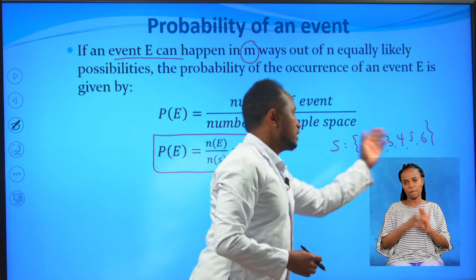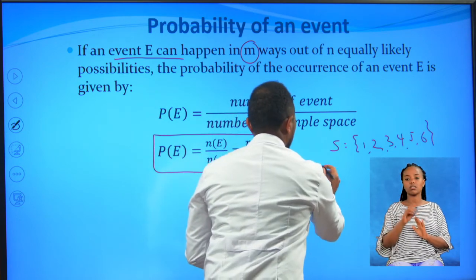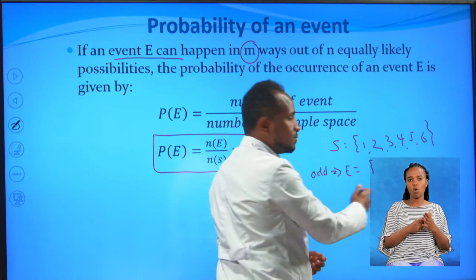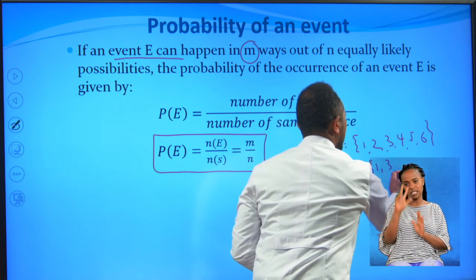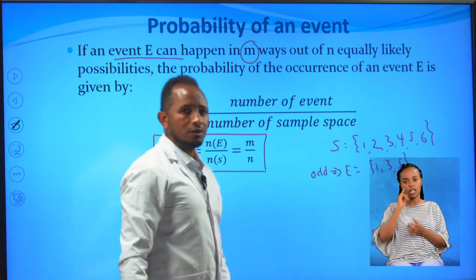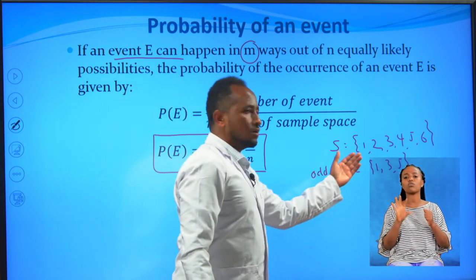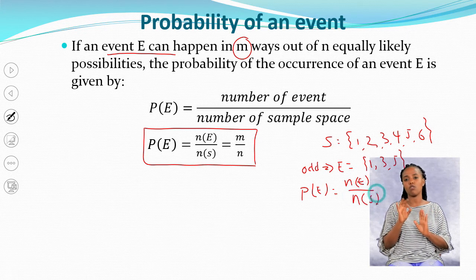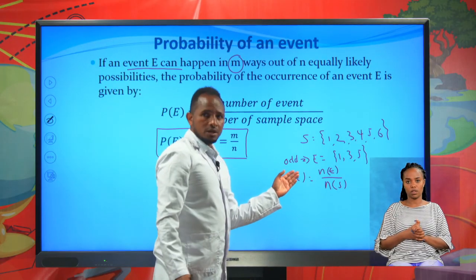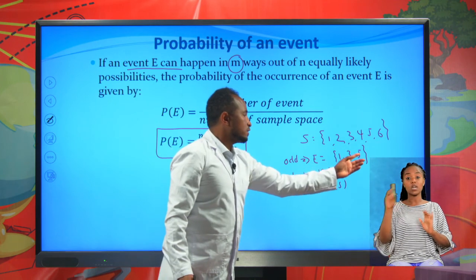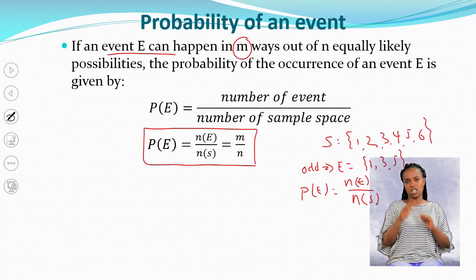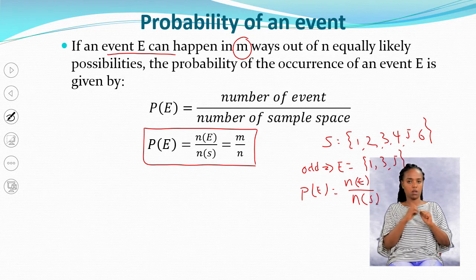For example, getting an odd number is a subset of the sample space. So the event of getting an odd number will have {1, 3, 5}. If we are asked what is the probability of getting an odd number when you roll a die, probability of the event equals number of favorable outcomes divided by the number of sample space.